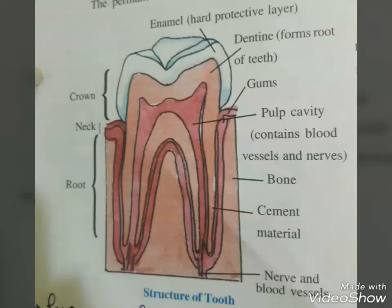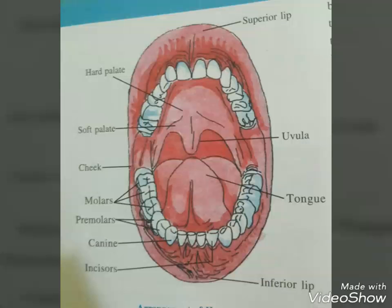Hormonal control of the secretion of digestive juices is carried out by local hormones produced by the gastric and intestinal mucosa. Absorption is the process by which the end products of digestion pass through the intestinal mucosa into the blood or lymph. It is carried out by passive, active, or facilitated transport mechanisms. Small amounts of monosaccharides like glucose, amino acids, and some electrolytes like chloride ions are generally absorbed by simple diffusion, which depends upon the concentration gradient. Some substances like fructose and some amino acids are absorbed with the help of a carrier — this mechanism is called facilitated transport.